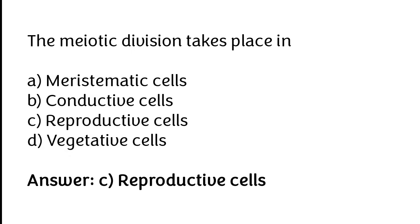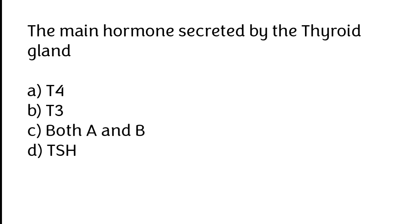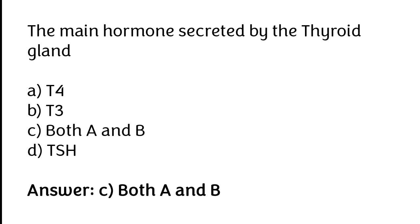The main hormone secreted by the thyroid gland is: T4, T3, both A and B, TSH. The correct answer is option C — both T4 and T3.